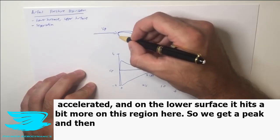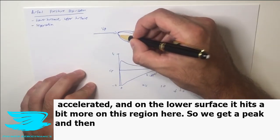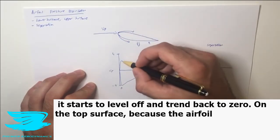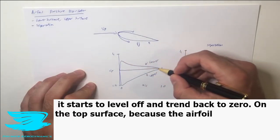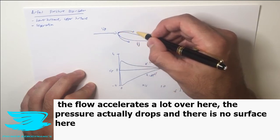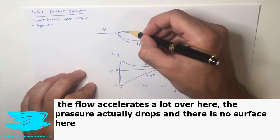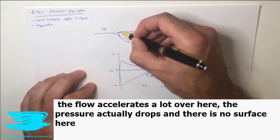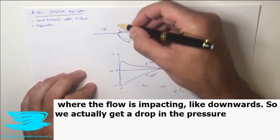On the lower surface it hits a bit more on this region here, so we get a peak and then it starts to level off and tread back to zero. On the top surface, because the flow accelerates a lot over here, the pressure actually drops and there's no surface here where the flow is impacting downwards.